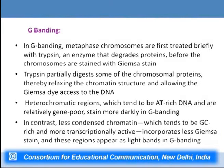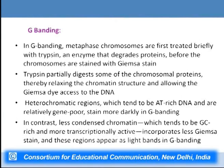In G banding, Giemsa stain is used. Metaphase chromosomes are first treated briefly with trypsin, which degrades protein, before staining with Giemsa. Trypsin partially digests chromosomal proteins, relaxing chromatin structure and allowing the Giemsa dye to access the DNA. Heterochromatic regions — which tend to be AT-rich and gene-poor — stain more darkly. In contrast, less condensed chromatin — which is GC-rich and more transcriptionally active — incorporates less Giemsa stain and appears as light bands. So G banding has dark bands for AT-rich regions and light bands for GC-rich regions.